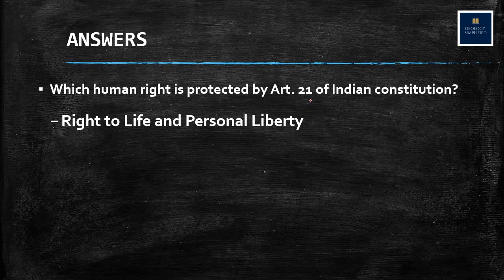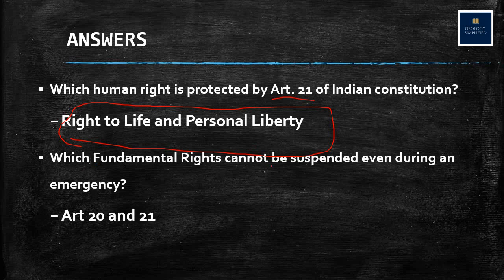Which human right is protected by Article 21? It is the right to life and personal liberty — one of the most important fundamental rights in the Indian constitution. Which fundamental rights cannot be suspended during an emergency? Those are Article 20 and Article 21. Article 20 is protection in respect of conviction for offences, and Article 21 is right to life and personal liberty.